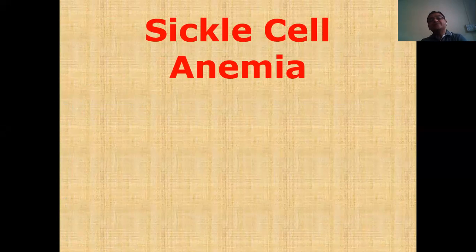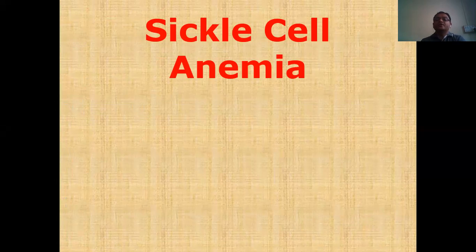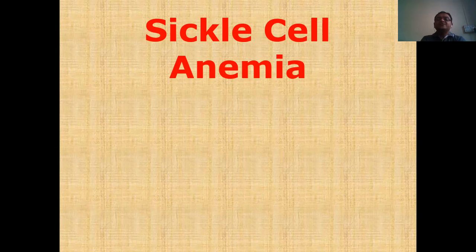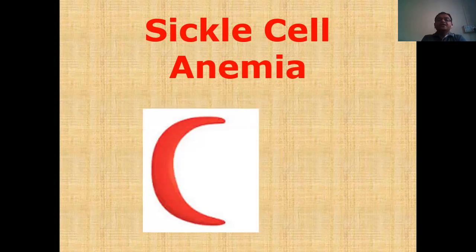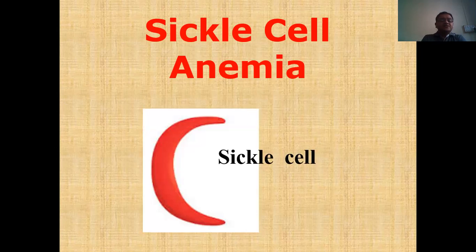Now, why is the name 'sickle cell' given? Whenever there is a deficiency of hemoglobin — which is required for the structure of the cell — the cell structure is not proper. You know that the RBC structure is a D-shape, circular one. But in case of sickle cell deficiency, a half-moon shaped structure is formed. That is why the condition is known as sickle cell. Sickle cell is not a disease but a disorder that occurs because of hemoglobin deficiency.